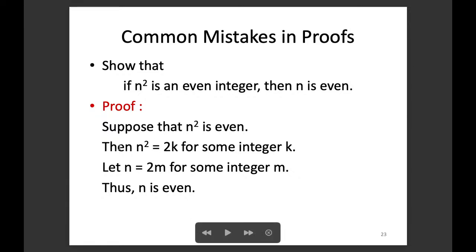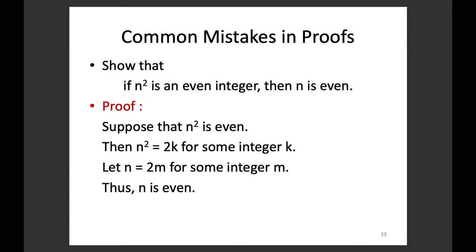This particular statement is rather difficult to prove by direct proof. On the other hand, it is very easy using proof by contraposition. Instead of proving P implies Q, we prove not-Q implies not-P. To show this statement, we show: if N is not even, then N² is not even. This can be easily done.